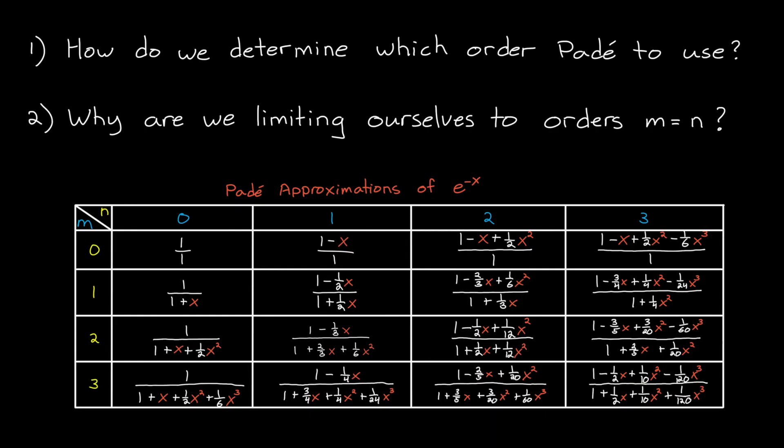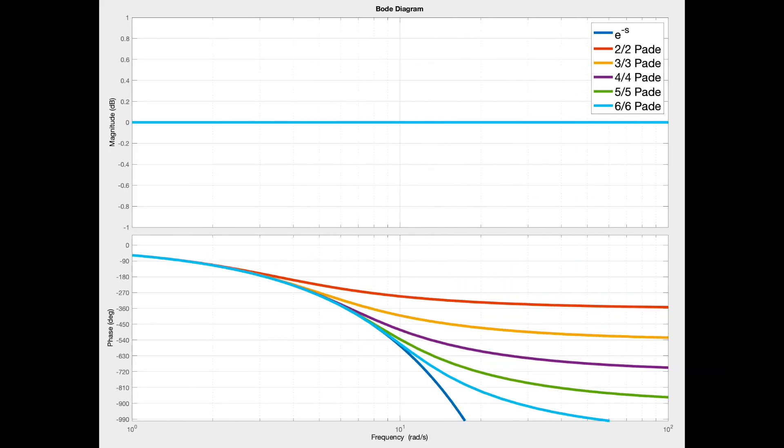So we typically try to limit the Padé approximation to equal order polynomials for both the numerator and denominator. But now let's address the first question, which order do we choose? The answer comes down to the amount of delay and the speed of the system. Let's look at the Bode plot for e to the minus s plus the first few orders of the Padé approximation. Notice that as the order of the approximation increases, the phase matches the real function to a higher frequency. The two over two approximation is good up to about two radians per second. The three over three is good to about four radians per second. The four over four is good to about six radians per second, and so on. So we can choose the order of the approximation based on which frequencies we care about in our system.